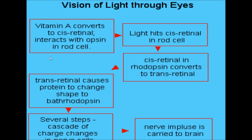To summarize: vitamin A is converted to cis-retinal, which is then converted to trans-retinal. Trans-retinal causes the protein to change shape to bathorhodopsin, which causes a cascade of changes in the nerve cell, generating an action potential. The nerve impulse is then carried to the brain, enabling us to see in twilight or dim light — that is all because of rod cells.